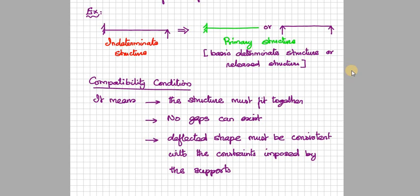For example, if you have fixed support and we know at fixed support the rotation is zero. Therefore, while drawing the deflected shape, we should not have any rotation or gap or the deviation of the member at fixed support level.